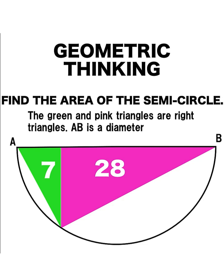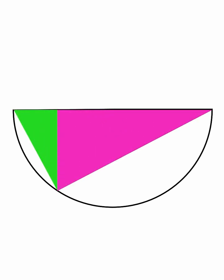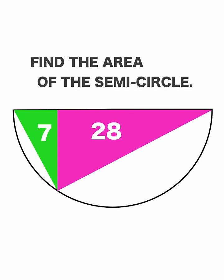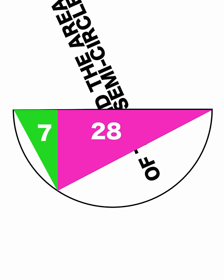Hi everyone, here is our math problem for today. We are given this semicircle and inscribed in this semicircle are two right triangles. The area of the green right triangle is seven square units and the area of the pink right triangle is 28 square units. We want to find the area of the semicircle.